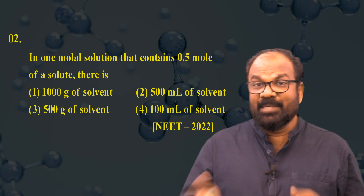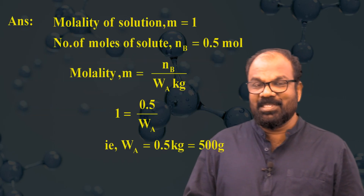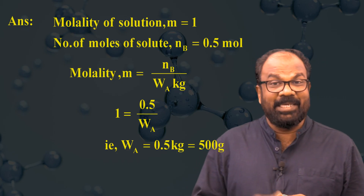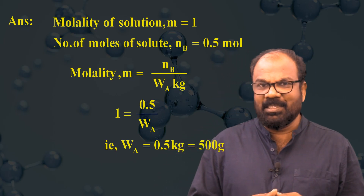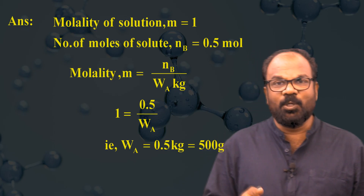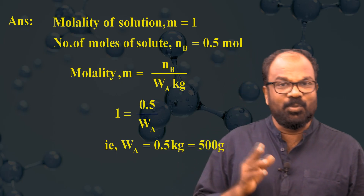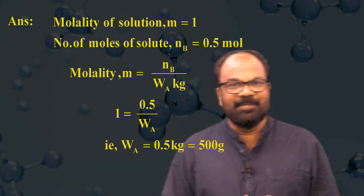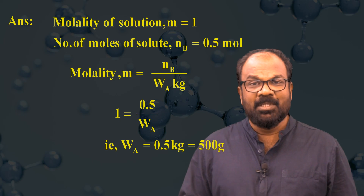A one molal aqueous solution is given. We need to find the amount of solvent which contains 0.5 mole of solute. Molality m = 1, number of moles of solute nB = 0.5 mol. The equation for molality is m = nB / wA (in kg). So 1 = 0.5 / wA, therefore wA = 0.5 kg = 500 gram. The answer is option number three.